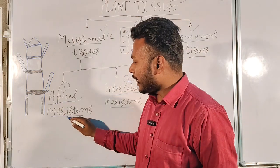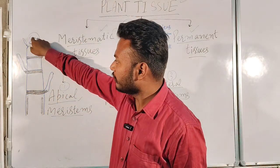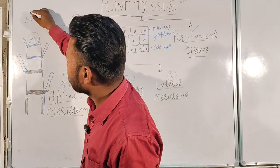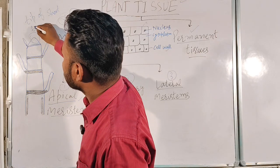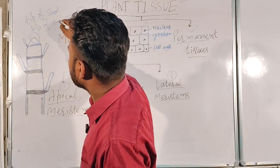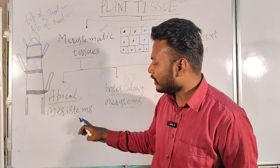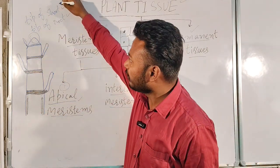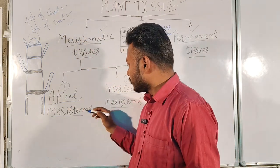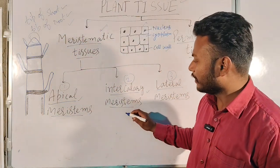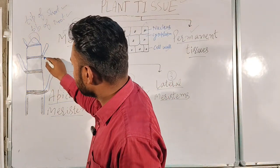Apical meristem is found at the tip — the tip of the shoot and the tip of the root. So apical meristem is found at the tip of the shoot as well as at the tip of the root.